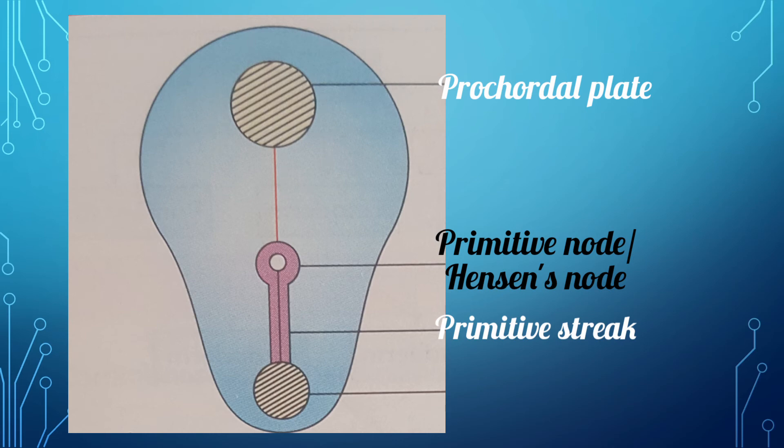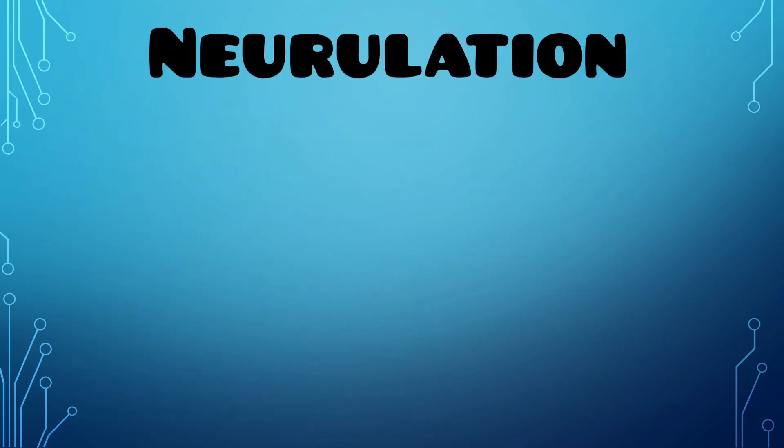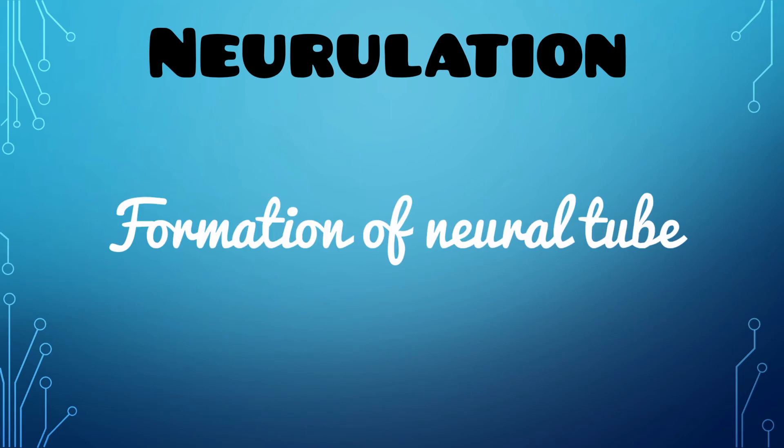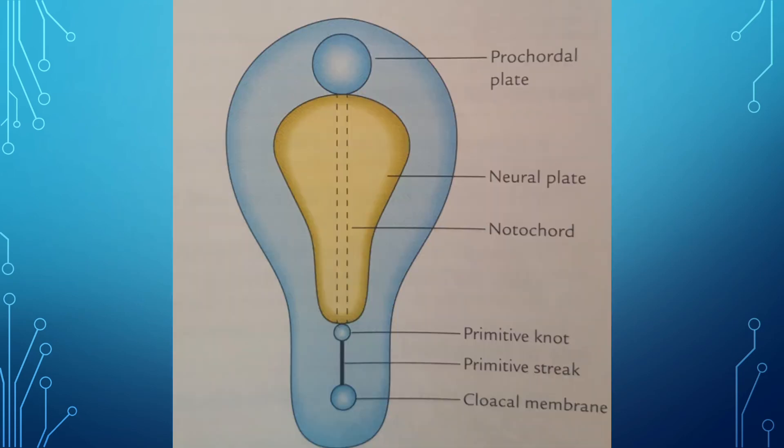During the formation of these structures, the embryonic disc attains a pear shape. Now let's talk about the formation of neural tube, which is called neurulation. As I told earlier, the notochord is a solid group of cells which are present between the ectoderm and endoderm from Hensen's node to the prochordal plate.